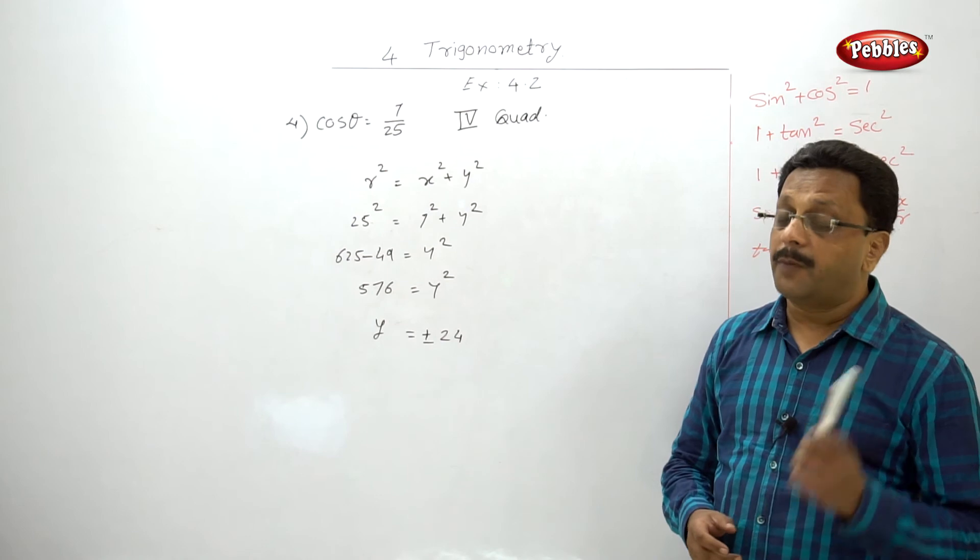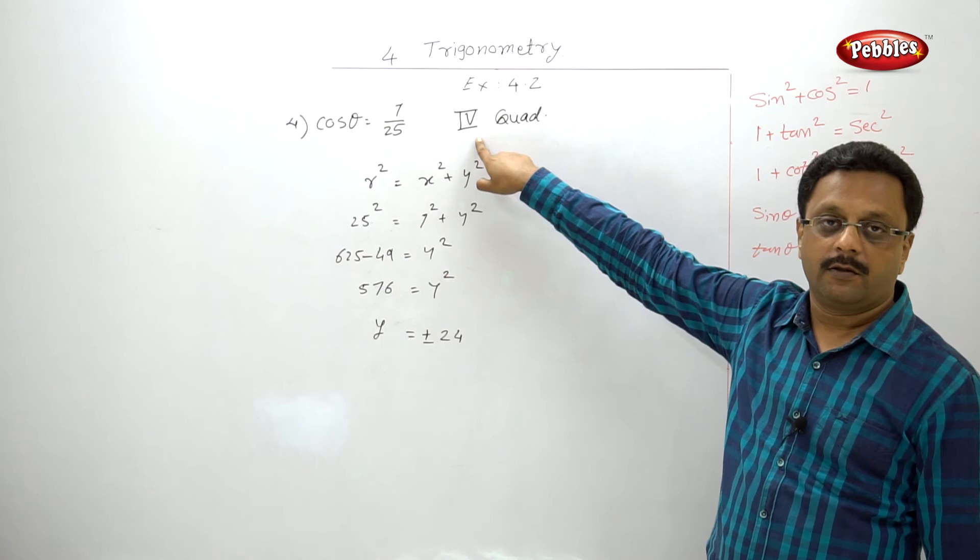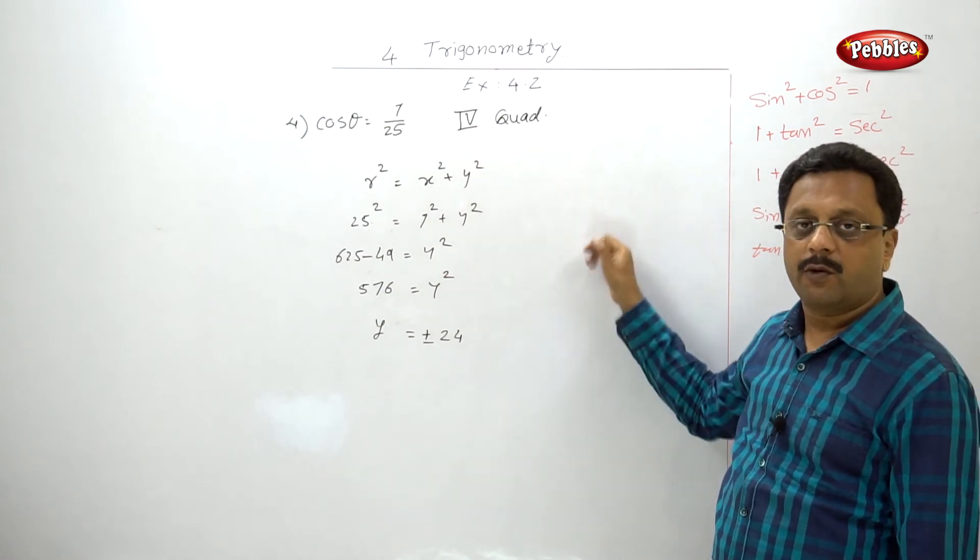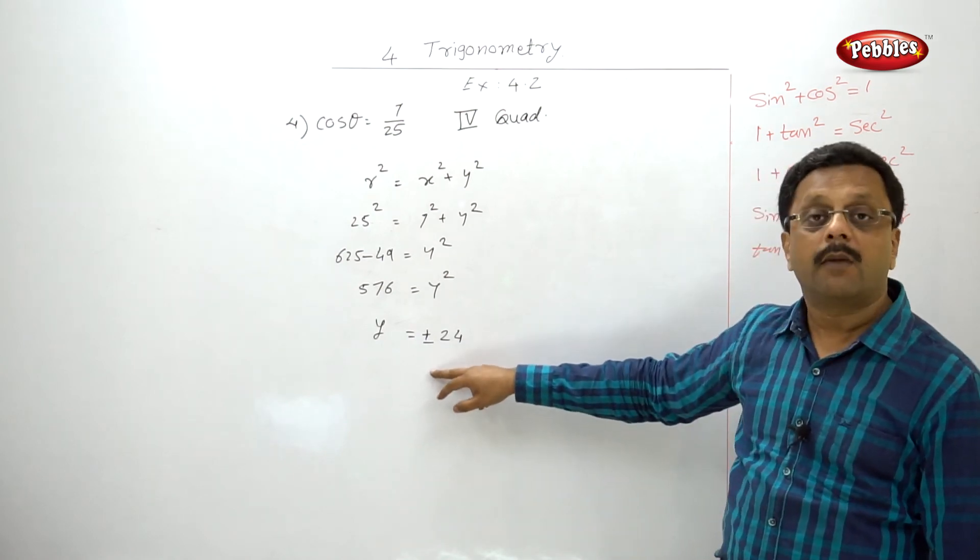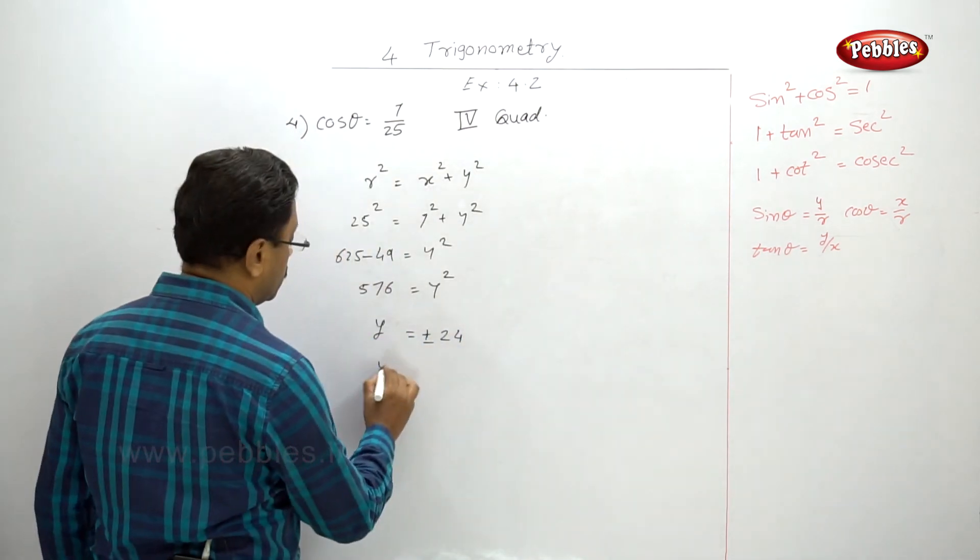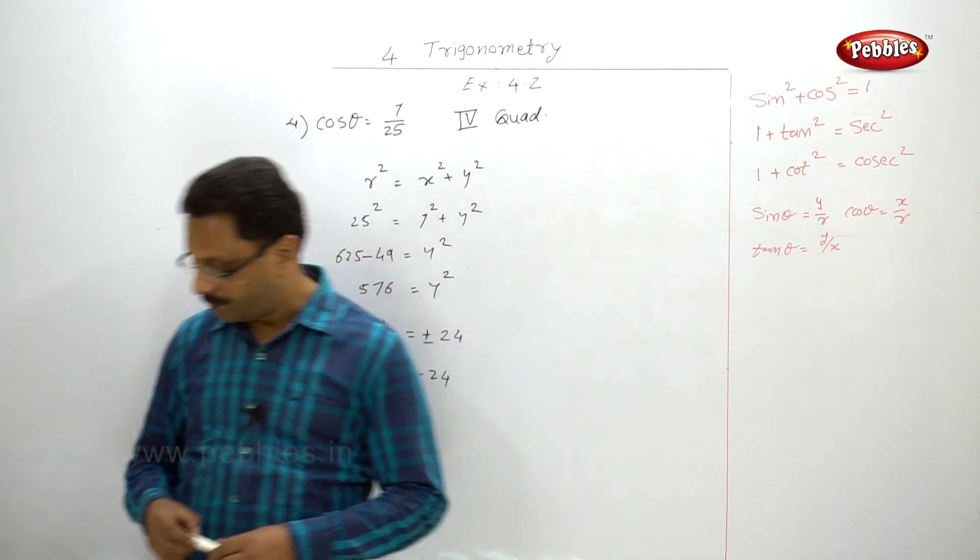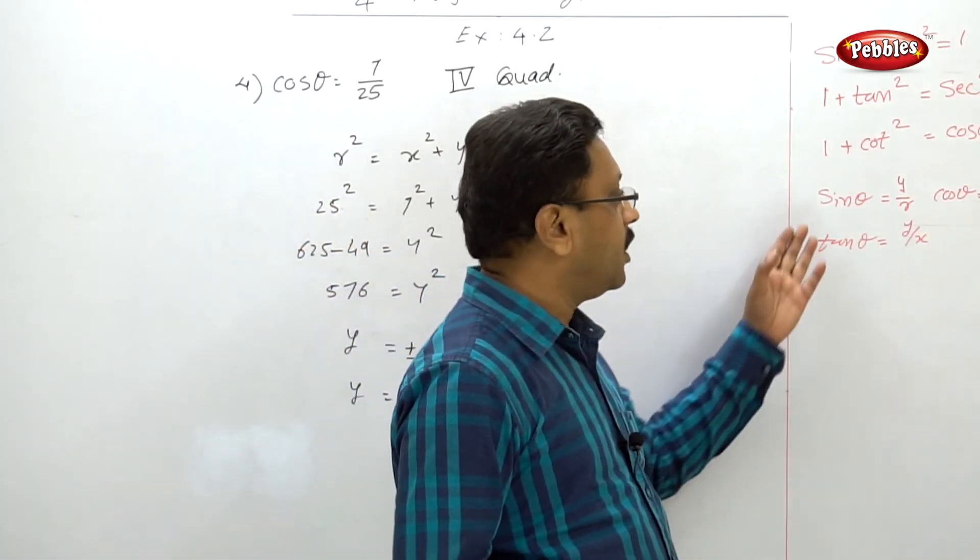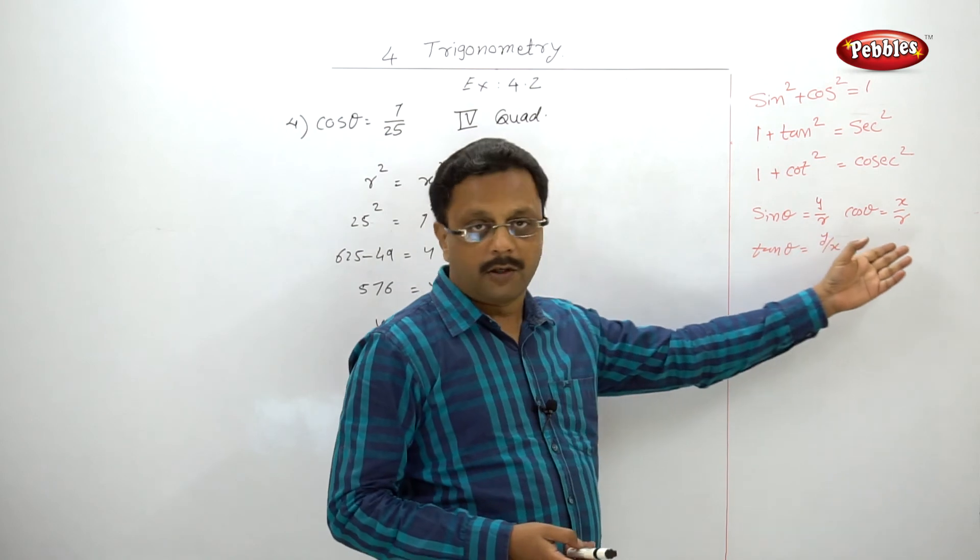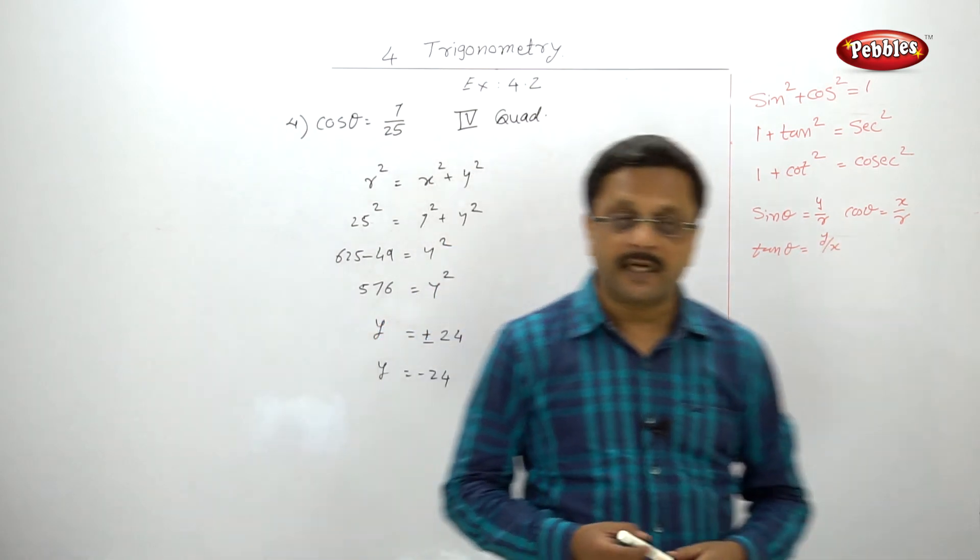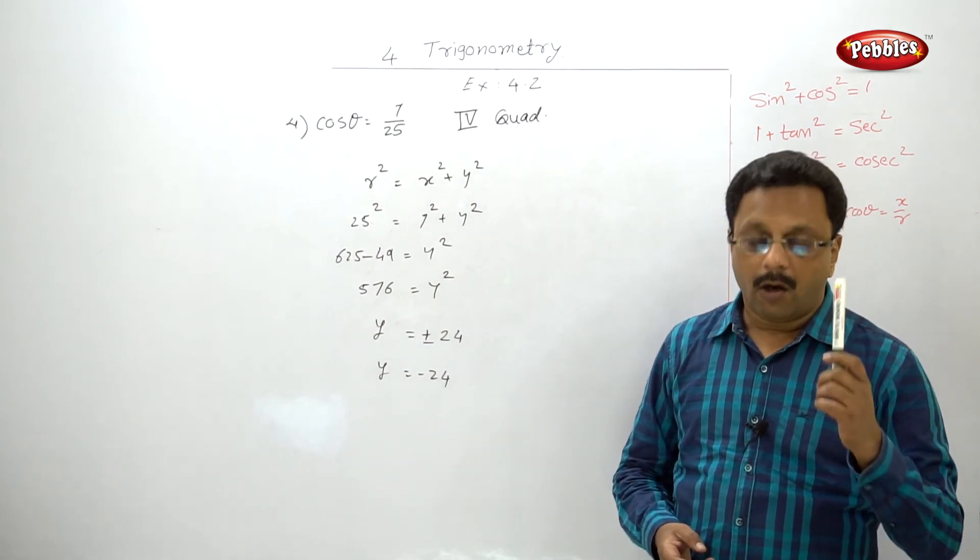Very simple. But now plus 24 or minus 24? As they said this is in fourth quadrant, when it lies in fourth quadrant, x is positive and y is negative. So we have to take here y = -24. And now you can easily find the value of other ratios: sine y/r, cos already given, tan, sec, cosec, and cot.